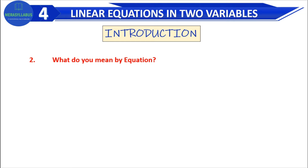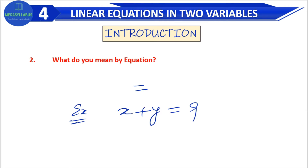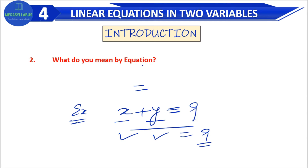Next comes equation — what is an equation? Any expression where an equality sign appears. Equate means to make two conditions equal. For example, if I write x plus y is equal to 9, this is an equation because x plus y is equated to 9. That means whatever values x and y take, they must add up to 9. So any expression that has an equals sign becomes an equation.